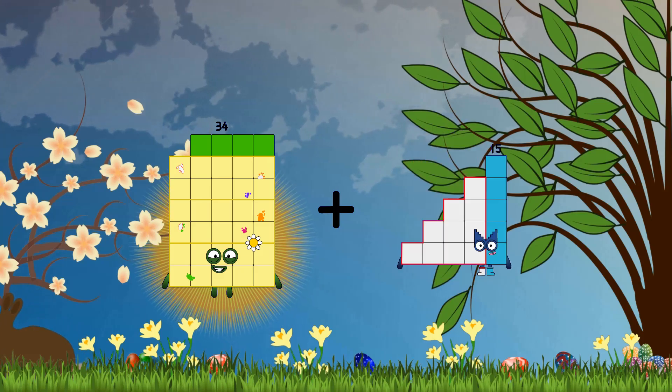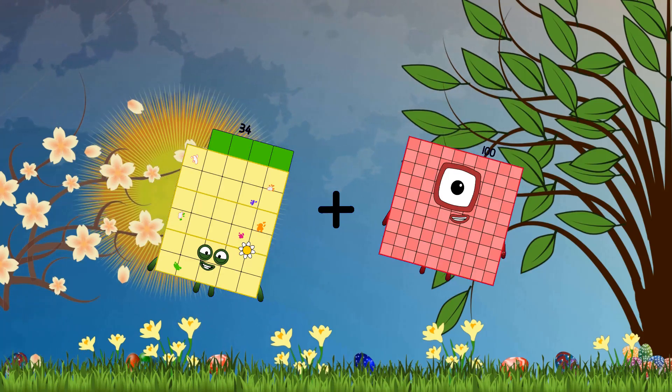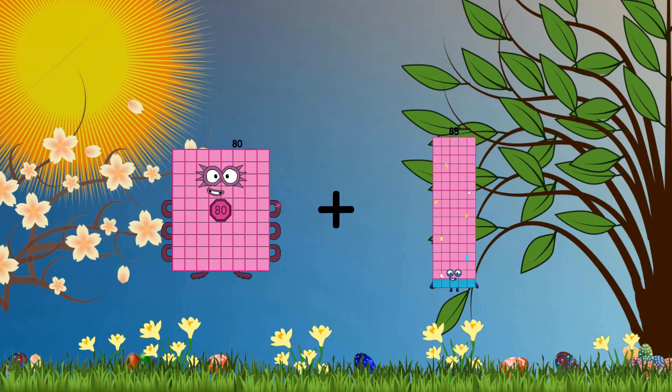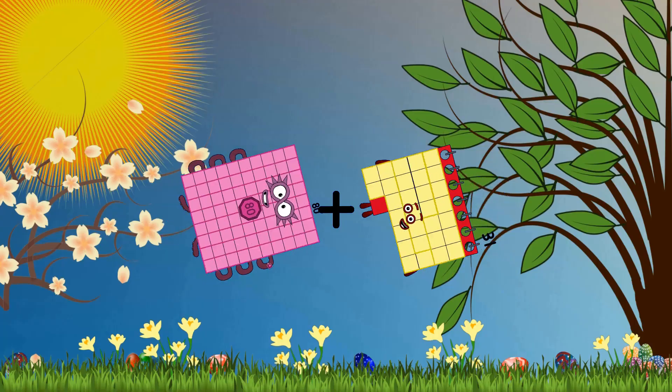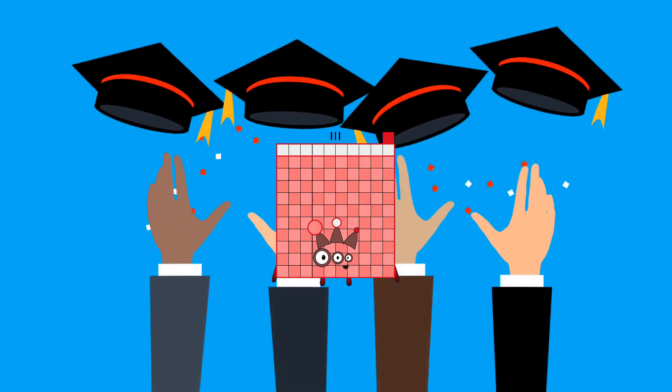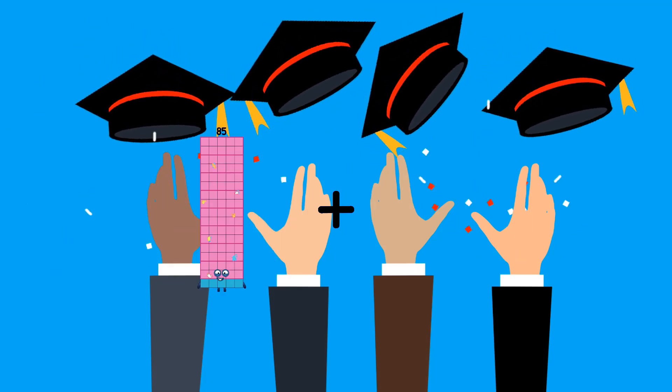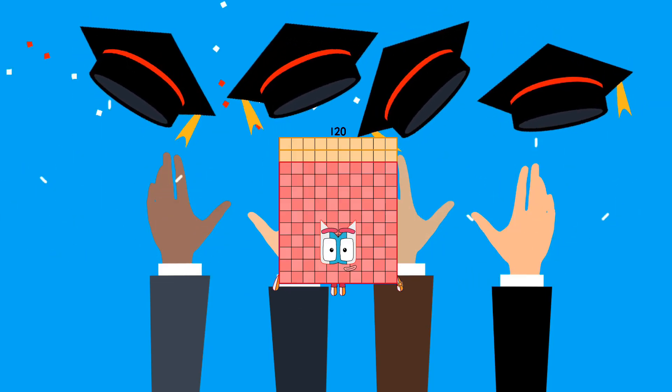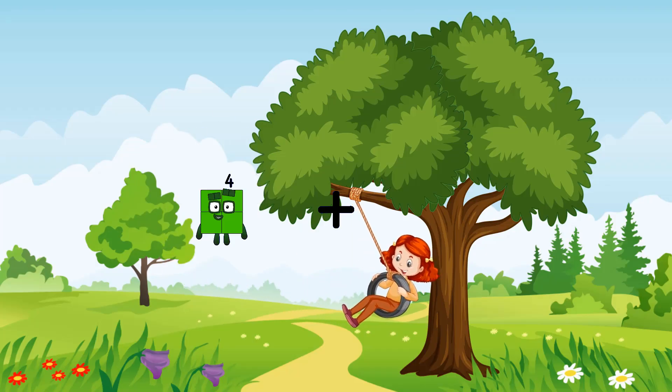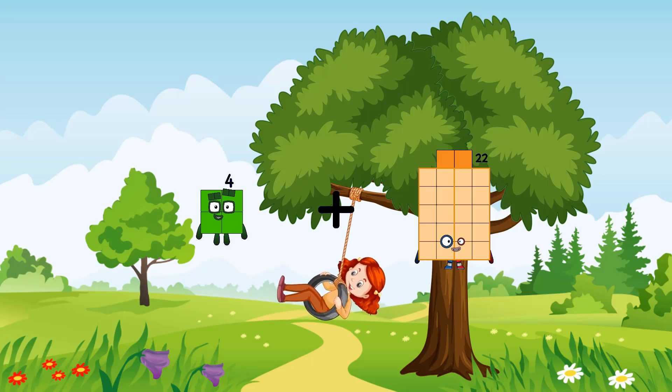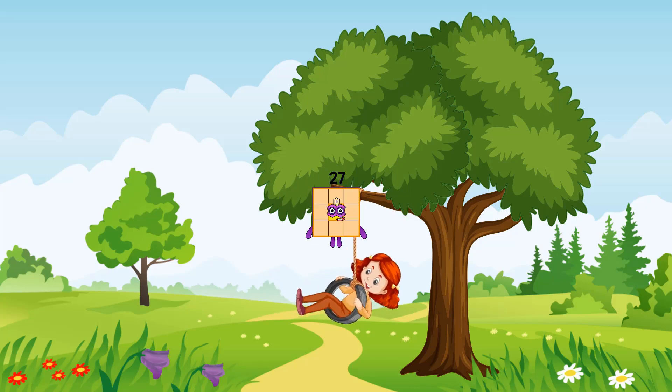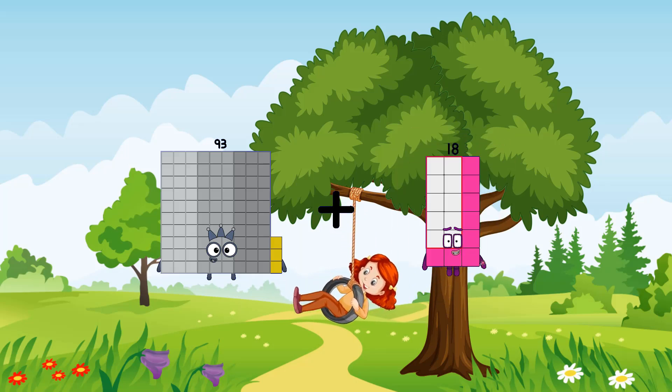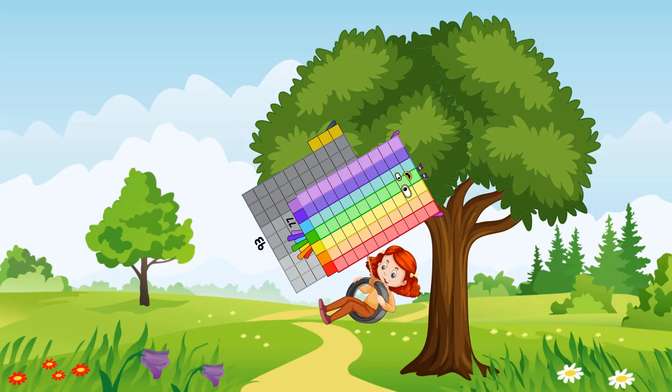34 plus 28, 100, 100 equals 134. 80 plus 31 equals 111. 85 plus 35 equals 120. 120 minus 23 equals 27. 93 minus 77 equals 170.